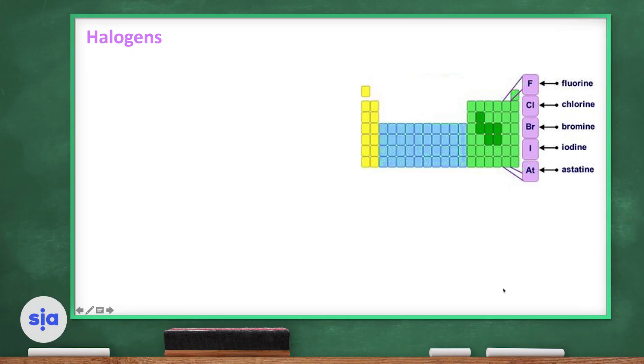Dear students, welcome to our science episodes. Today we are going to discuss main groups in the periodic table. Today we are going to talk about halogens.